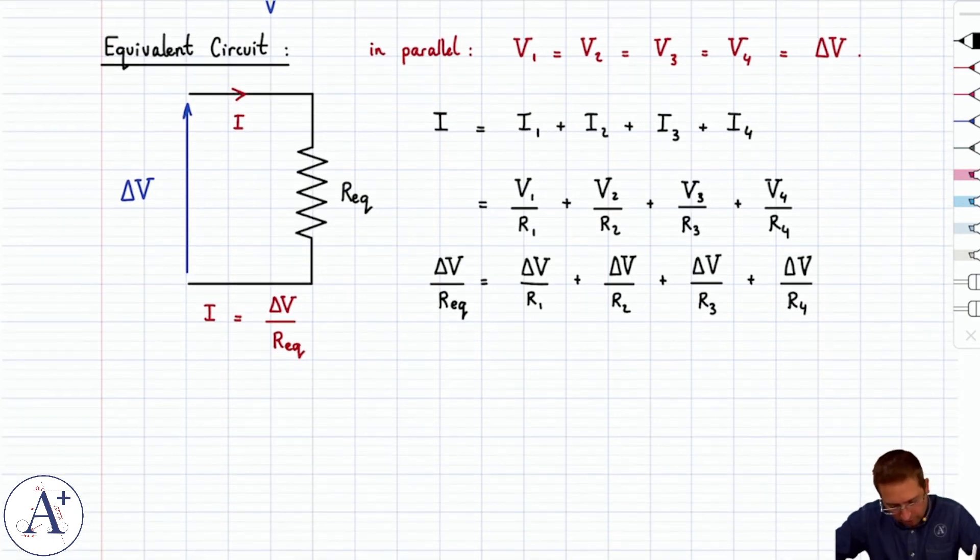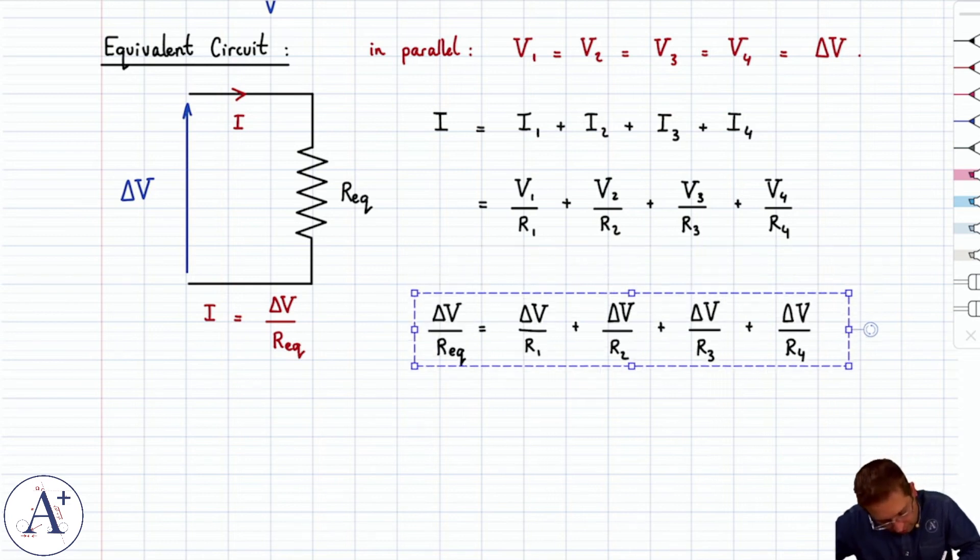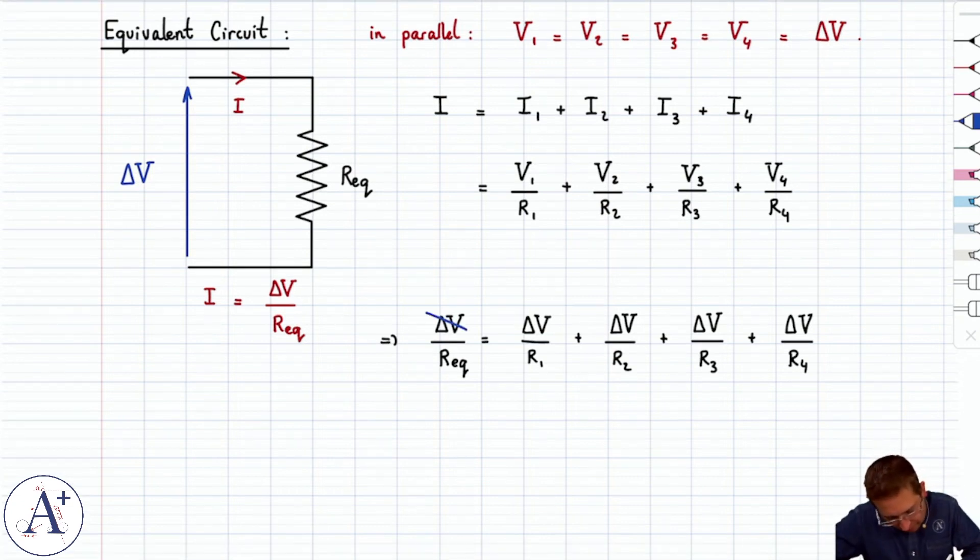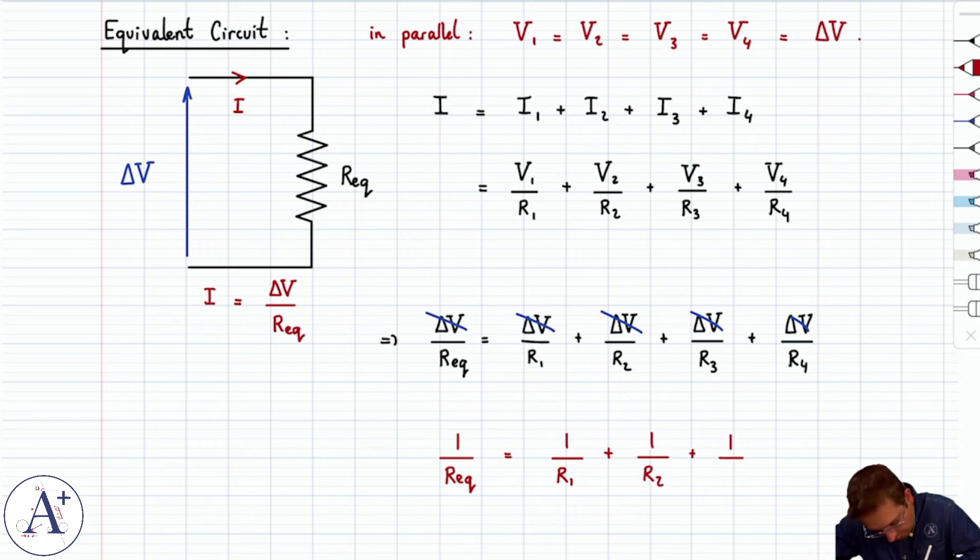Let's make this maybe a little bit clearer where we're going to make some room here and move this down. And so we can simplify delta V everywhere, and we find that 1 over R equivalent is equal to 1 over R1 plus 1 over R2 plus 1 over R3 plus 1 over R4.